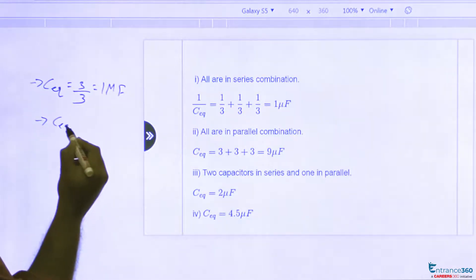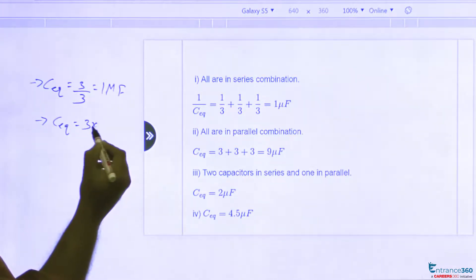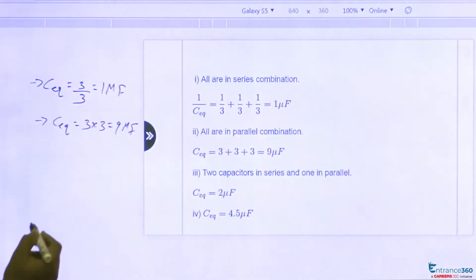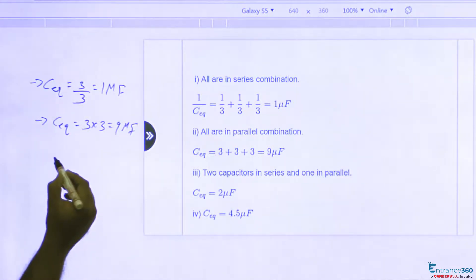If they are connected in parallel, C equivalent will be 3 plus 3 plus 3, which is equal to 9 μF.